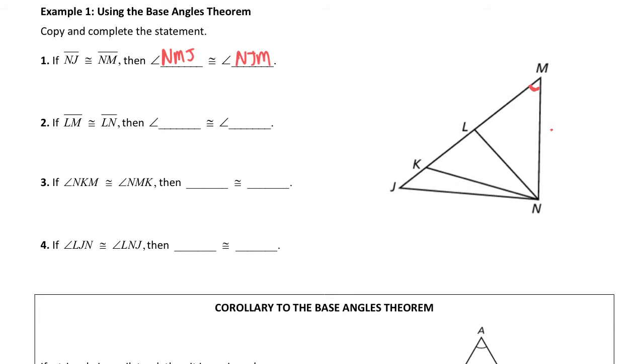In the next part, if LM and LN, so LM, LN, these two sides are congruent, we look at the angles that are opposite from them. The angle opposite from LN, we could say M,